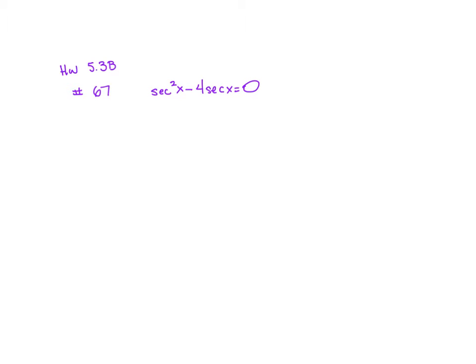Here's homework help on number 5.3b, number 67. We are supposed to solve using inverse. First, let's factor out a secant of x, so we're left with secant of x times secant of x minus 4 equals 0.